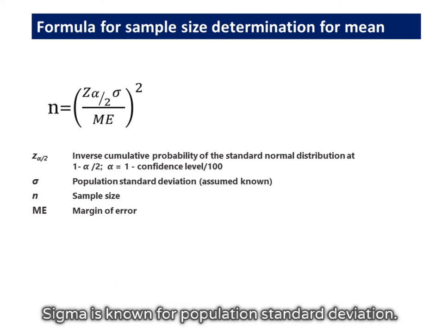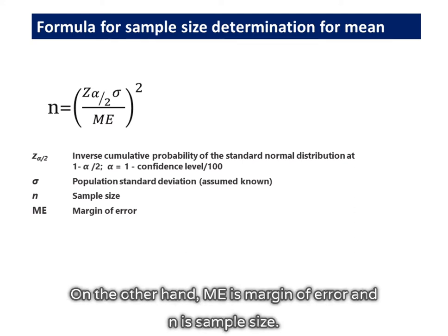Sigma is the known population standard deviation. On the other hand, ME is margin of error and n is sample size.